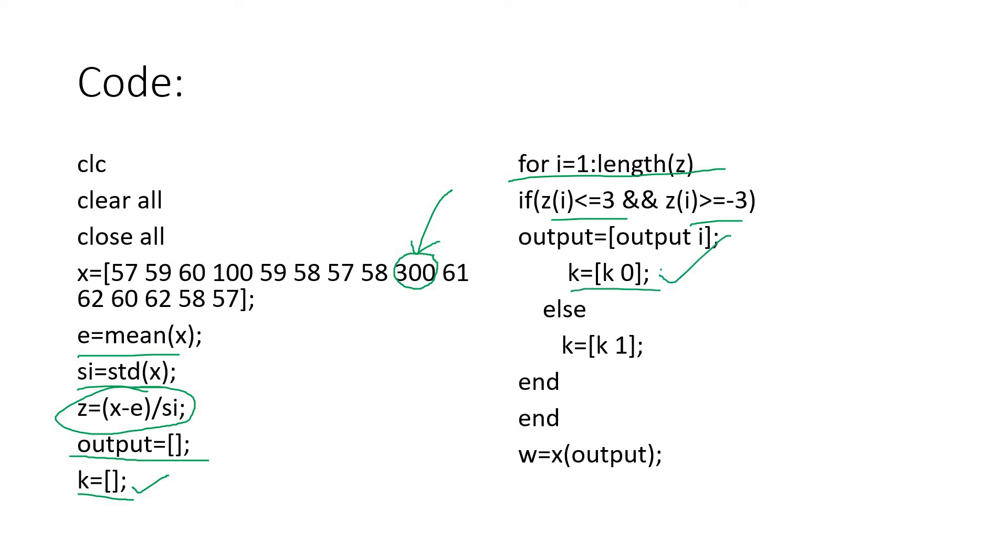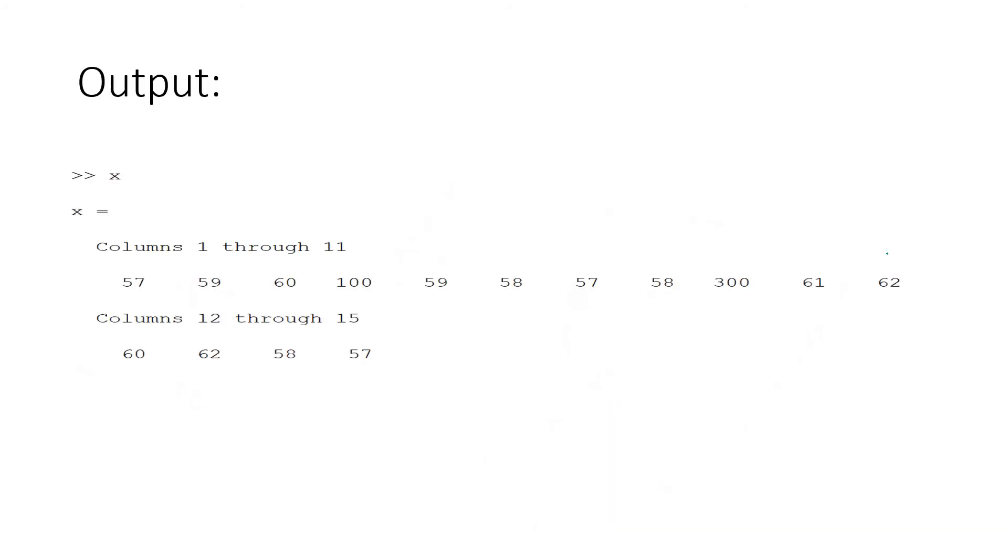So output will be storing that particular index, and for the logical array which will be showing us whether outlier or not, we will be storing zero because that is not an outlier. Else k = k1, that means we are storing one that will indicate the outlier index. We will not give that particular index element as output. Finally our data will be w = x(output), which will store the data without outliers.